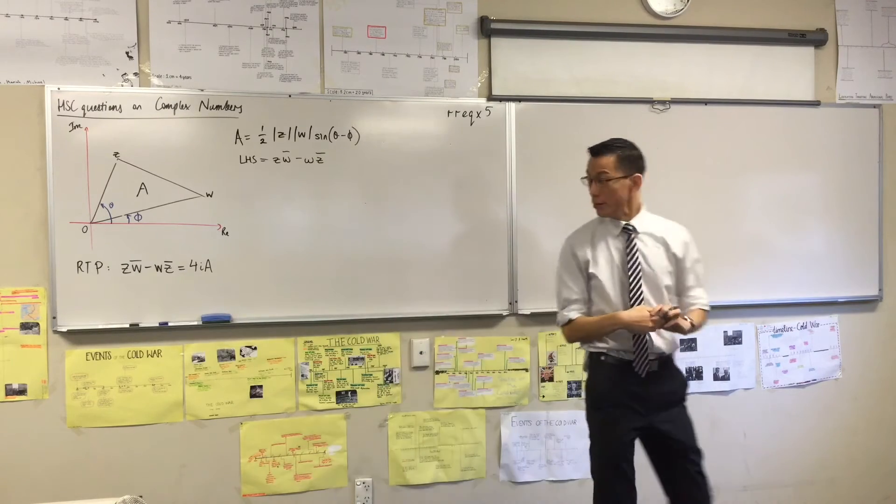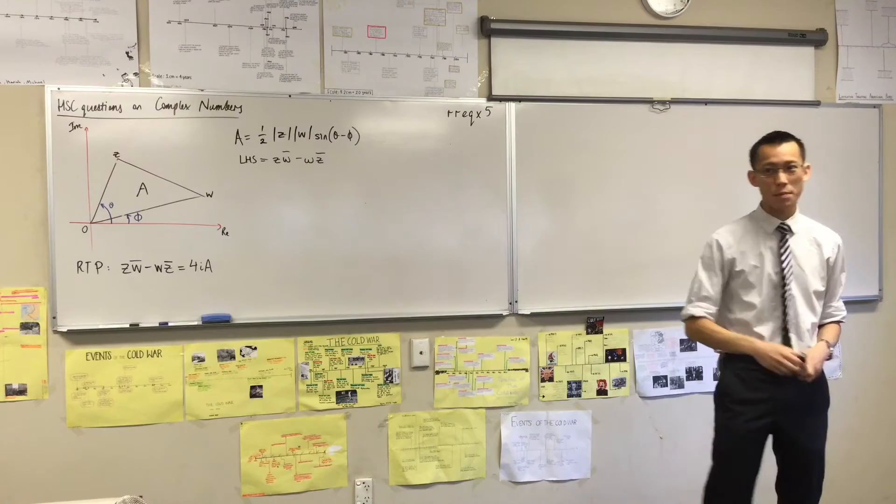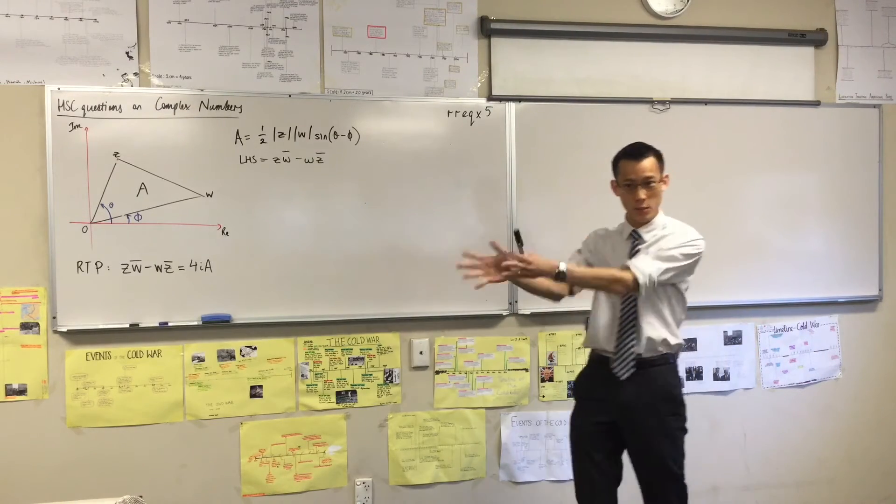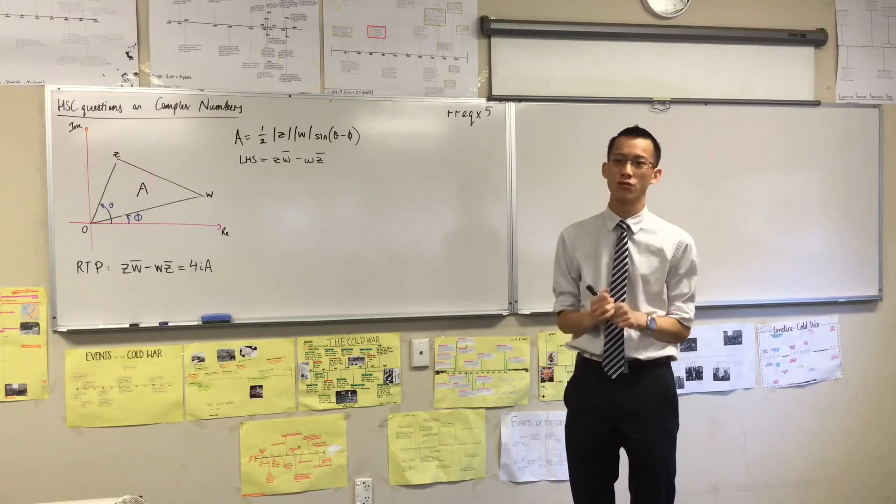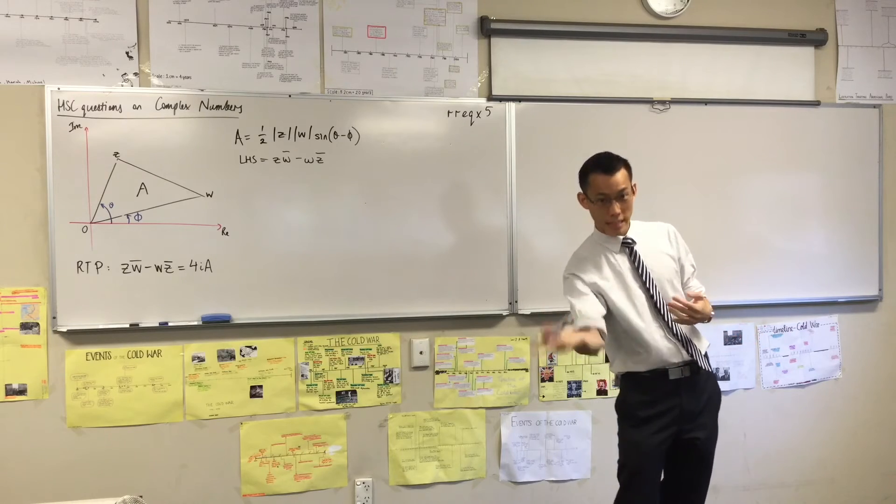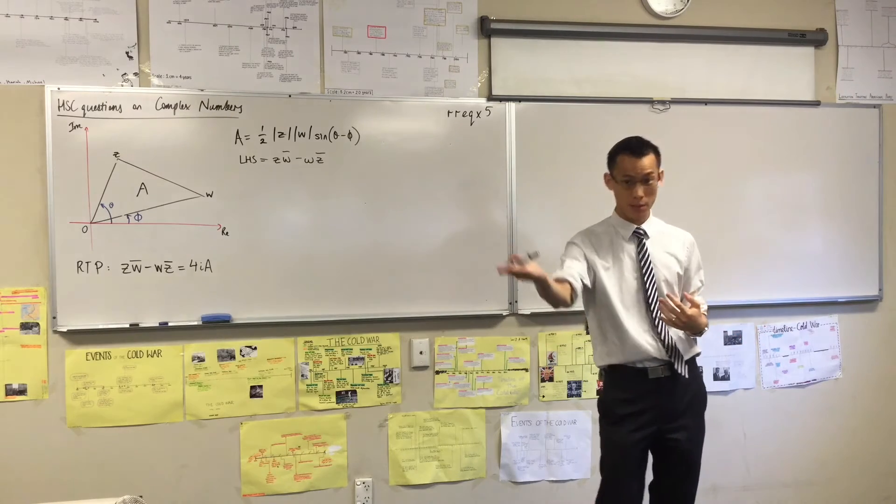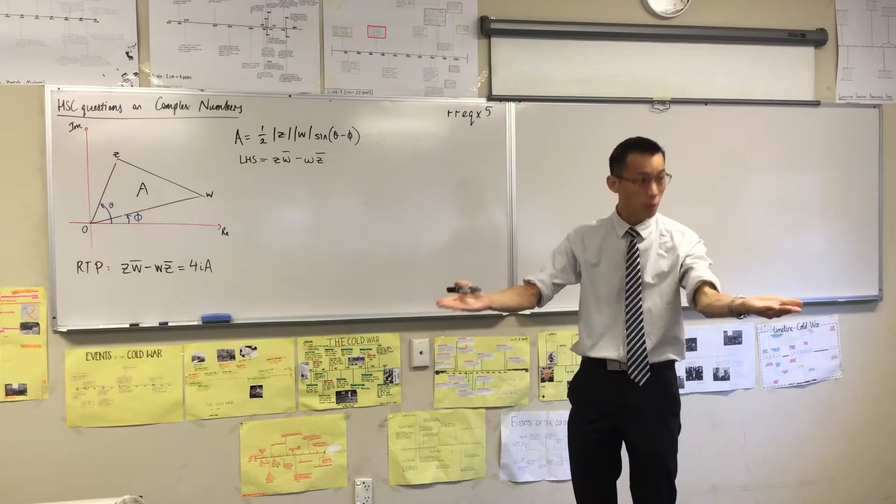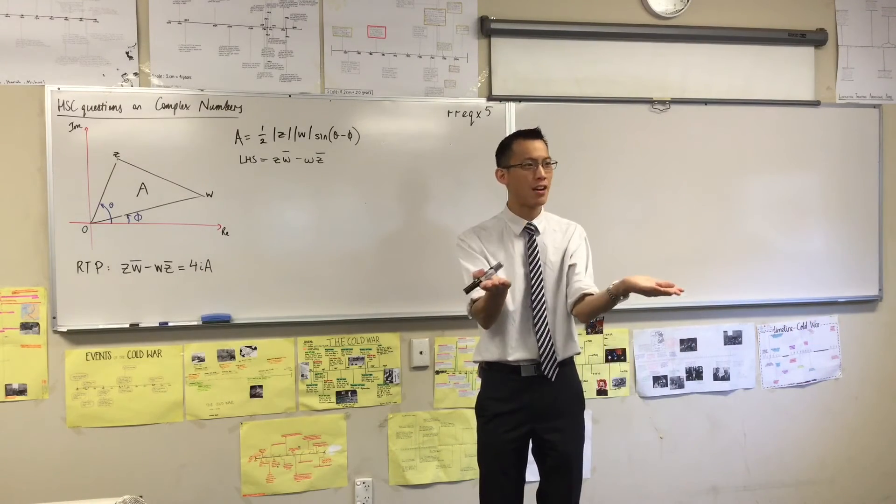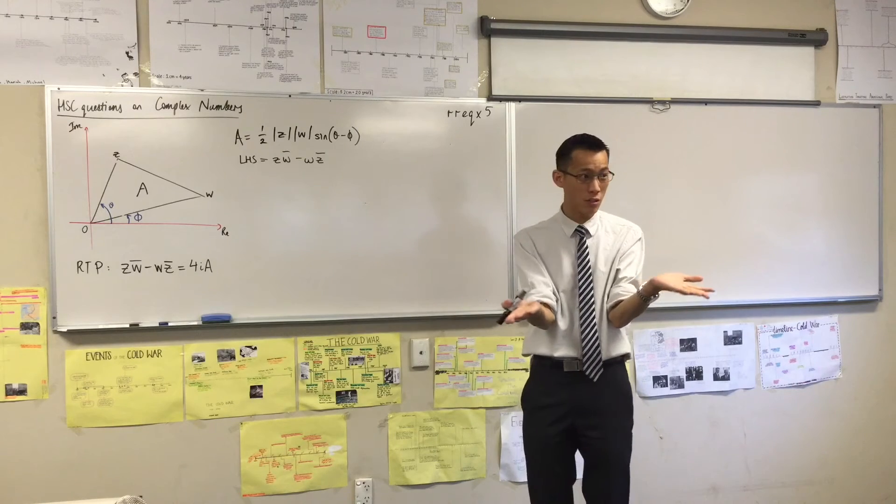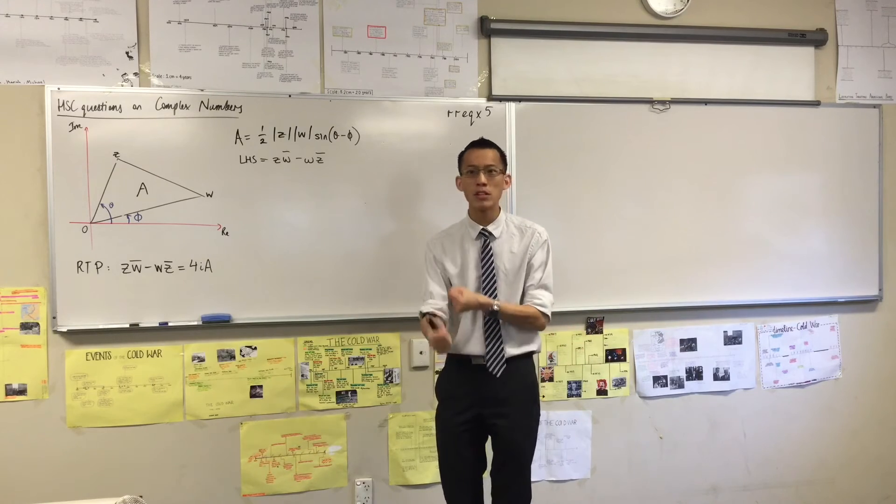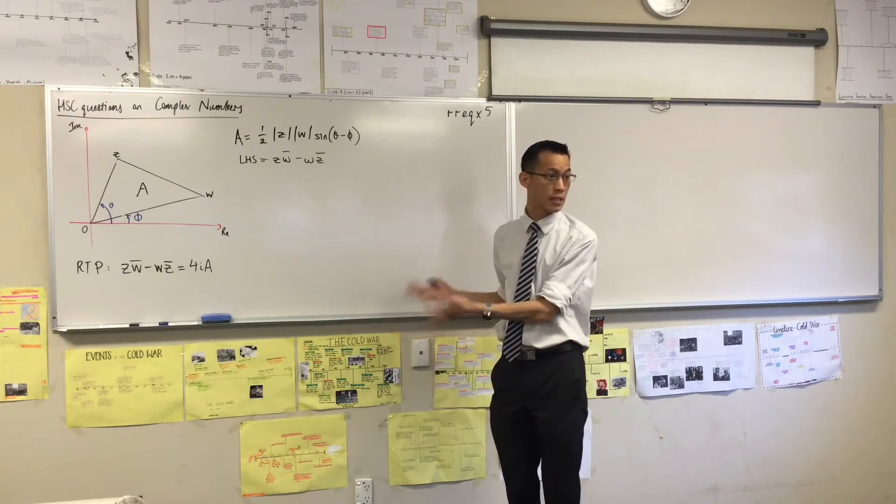Now we know complex numbers can be represented in one of two ways, and they haven't given us a way yet. The questioner hasn't said this way or that way, so you get to choose. So which are the two ways again? You've got rectangular form, which is x plus y, and then you've got polar form, which is r(cos θ + i sin θ).